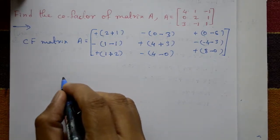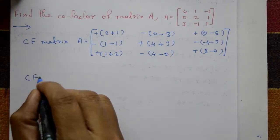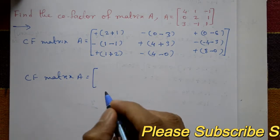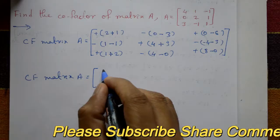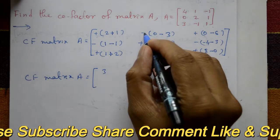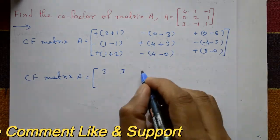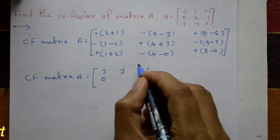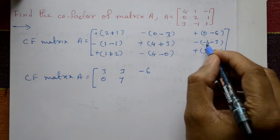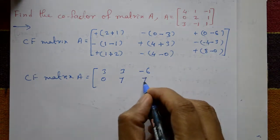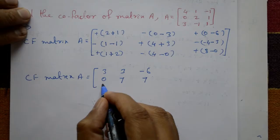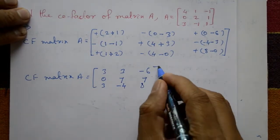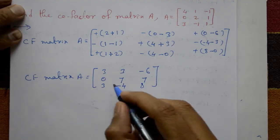Now this is equal to — cofactor of matrix A is equal to: plus 3, minus 3, minus sign is again 3, and this is minus 6. This is 0, 7, minus 7 into minus sign is again plus 7. Plus 3, minus 4, and 8. This is the required cofactor of matrix A.